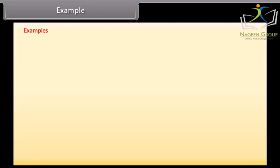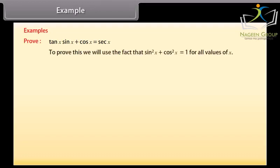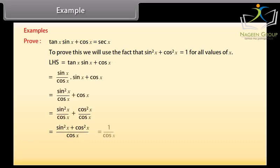Example 1: Let's now solve some examples related to trigonometric identities. Prove that tan x·sin x plus cos x is equal to sec x. To prove this, we will use the fact that sin square x plus cos square x is equal to 1 for all values of x. On solving the left-hand side, which is tan x·sin x plus cos x, we get sec x, which is equal to the RHS. Hence, tan x·sin x plus cos x is equal to sec x.